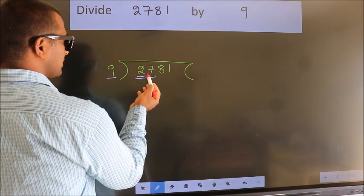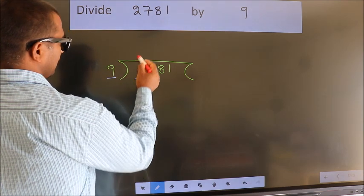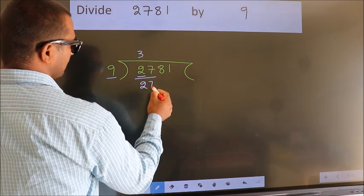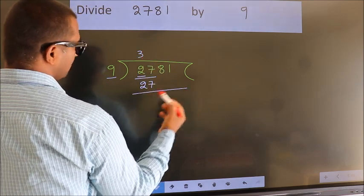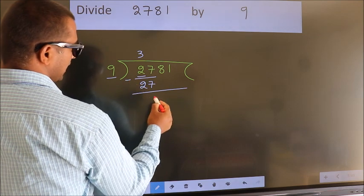When do we get 27 in the 9 table? 9 threes, 27. Now we should subtract. We get 0.